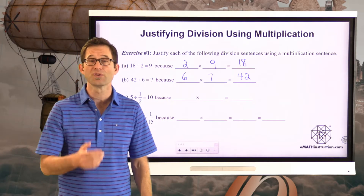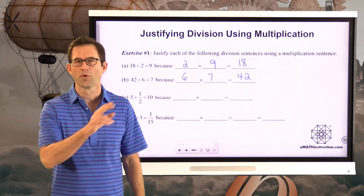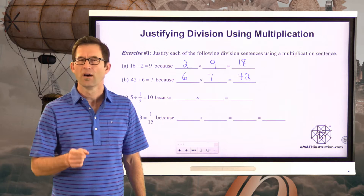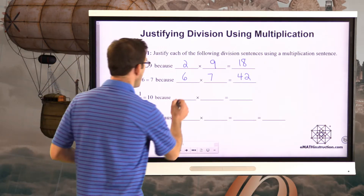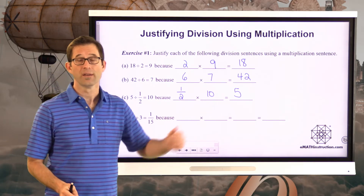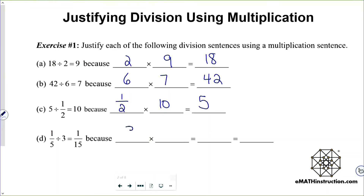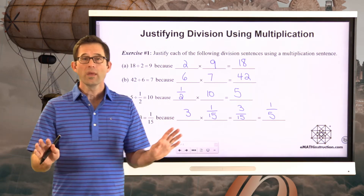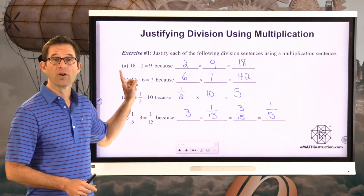Letters A and B are probably automatic — when you see 18 divided by 2, you just know it's 9. Same with 42 divided by 6. Something like letter C, though — 5 divided by 1 half equals 10 — we can justify that by saying 1 half times 10 equals 5, and 1 half of 10 certainly is 5. Maybe even stranger: 1 fifth divided by 3 is 1 fifteenth, because 3 times 1 fifteenth equals 3 fifteenths, which simplifies to 1 fifth. We can reason out any division problem by thinking about what we'd multiply the divisor by to get the dividend.